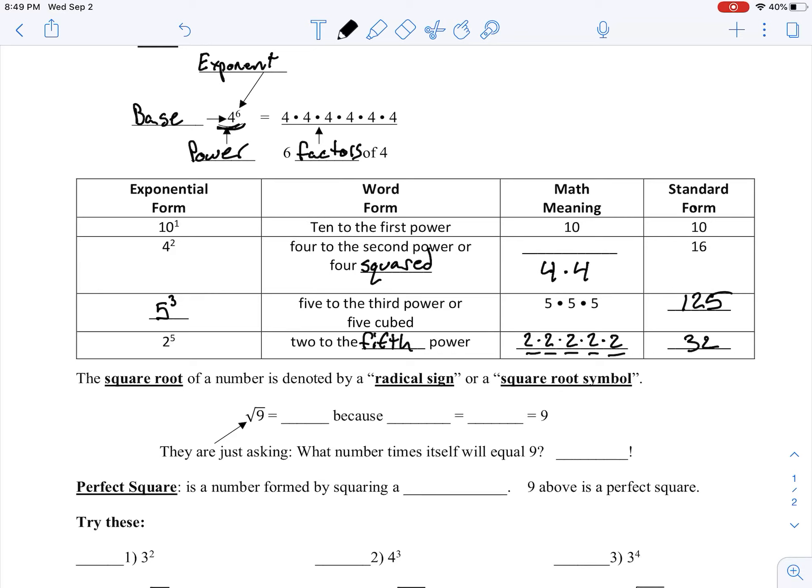Alright, so when we're squaring something, we're just dealing with the exponent of 2. So square roots are going to be the opposite of squaring something, or taking something to the second power. Just like subtraction is the opposite of addition, division is the opposite of multiplication, square roots is going to be the opposite of squaring. So here it's telling us that the square root of 9 is going to be 3, because 3 squared is going to be 3 times 3.